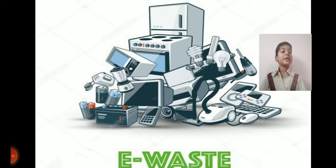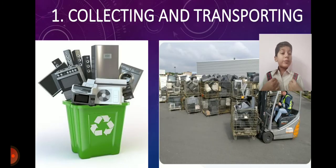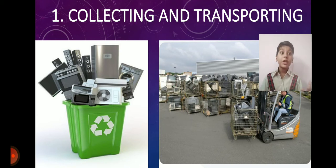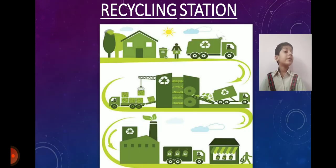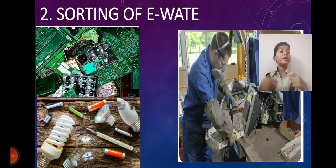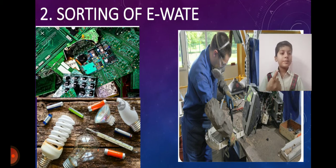E-waste recycling is the process of reuse of electronic waste. In this process, recyclers collect the e-waste from recycle bins and collection locations and then send it to the recycling station. There, the e-waste is sorted manually, where various items like bulbs, batteries, and circuit boards are removed for their own processing.